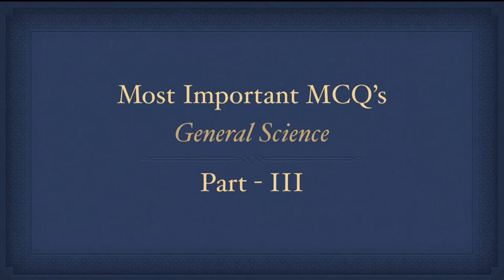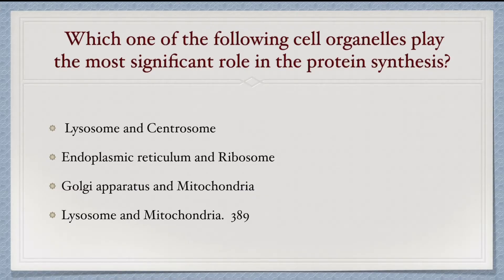Hello everyone, welcome to my new video. This is the third video of general science. The first question is: which one of the following cell organelles play the most significant role in protein synthesis? From the options, endoplasmic reticulum and ribosomes is correct because its membrane is littered with ribosomes which are responsible for protein synthesis. So option B, endoplasmic reticulum and ribosomes, will be the correct answer.